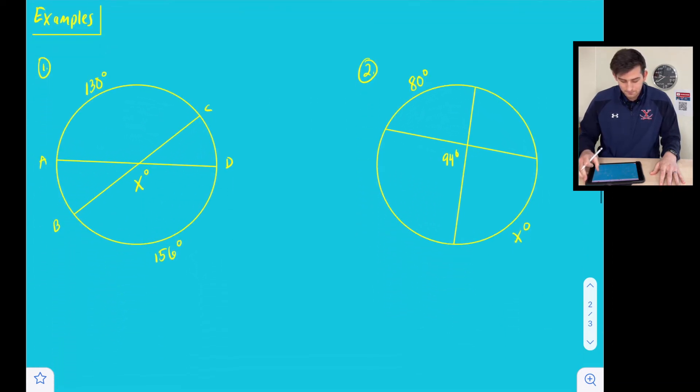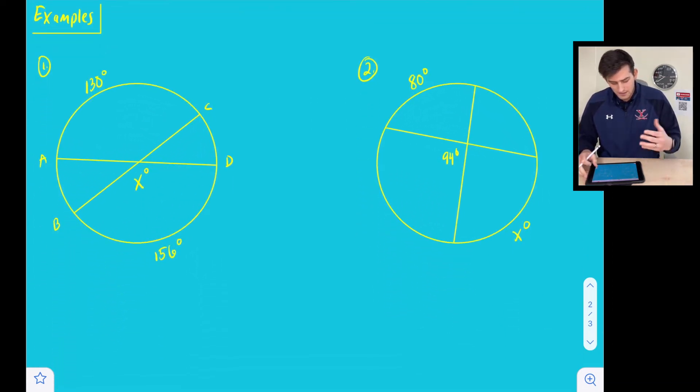So let's look at a couple examples here where we apply this theorem. So for number one, we are given that we want to find the value of X. We know that we're given 156 degrees is the measure of arc BD, and the measure of arc AC is 130 degrees.